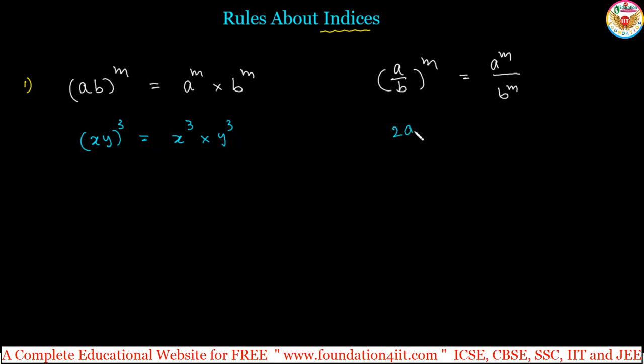Same way, if it is 2a square by 3 whole to the power 4, we have each and every element in this we need to express this power. So 2 to the power 4 into a square to the power whole to the power 4 by 3 to the power 4. This if we simplify, you will get answers for this. That means if any bracket and all to the power some number, that should exist for each and every element in this.